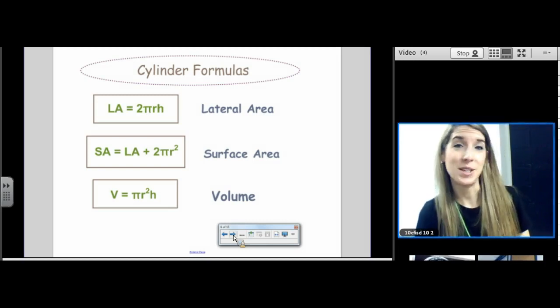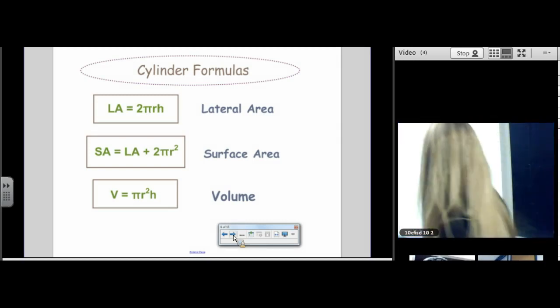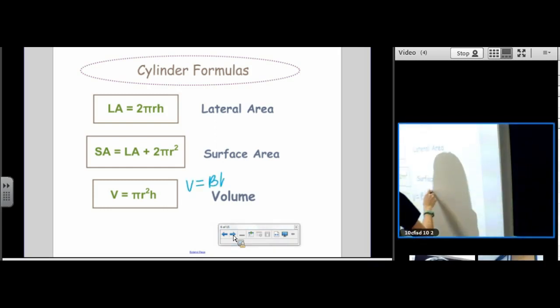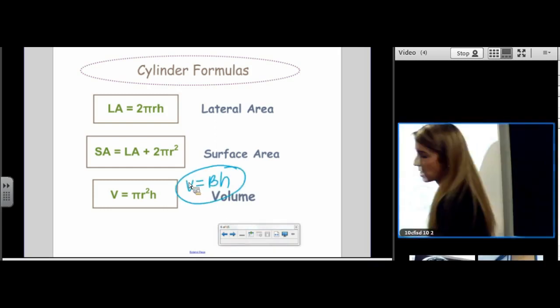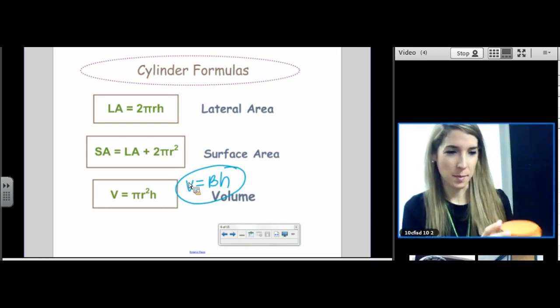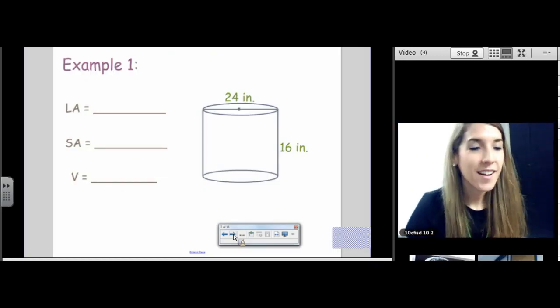And then, of course, volume is just base times height. Now, be careful. Your formula chart only says this. This is all they give you. They don't say πr²h. But you know that the base is a circle, and you know that the area of a circle is πr².